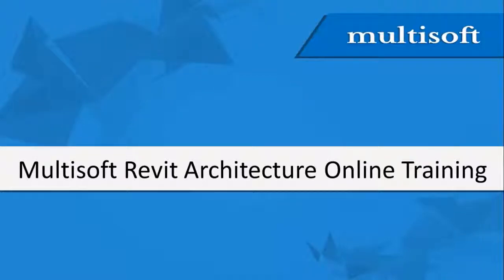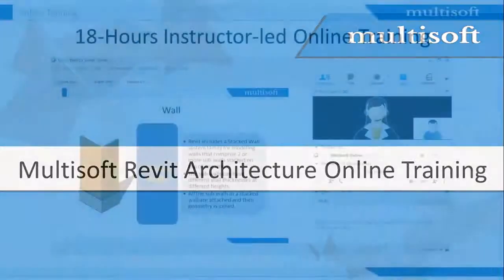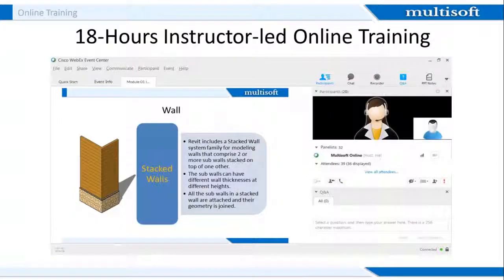Let's now gain an insight into how Revit Architecture online training will happen at Multisoft. When you register with us for the training, we will connect with you as per the pre-decided time and impart training for 18 hours in all. For the exact schedule and each session's duration, you can refer to the training calendar on our website. The training happens through a secure web conferencing tool that allows a real-time learning experience. Once you register with us, we send out event links wherein you log into a collaborative platform that allows two-way interaction between the student and the trainer through webcam and voice chat.